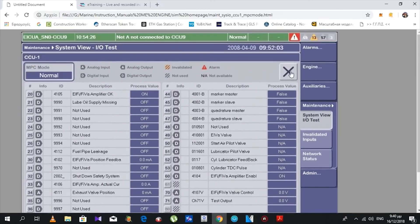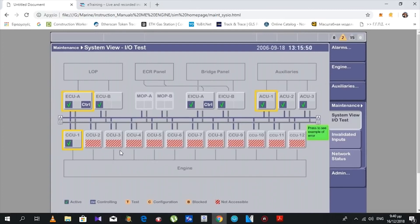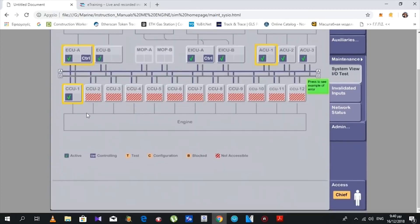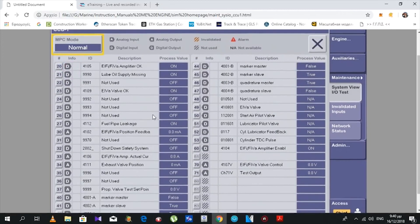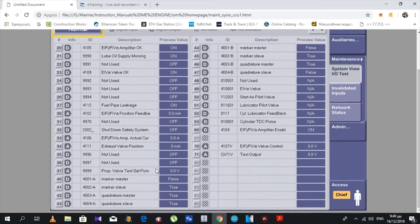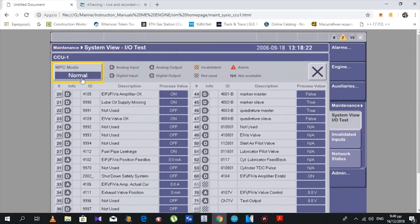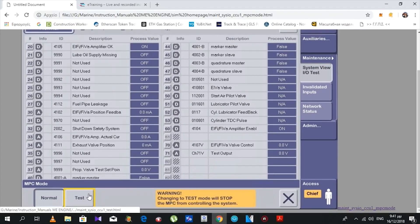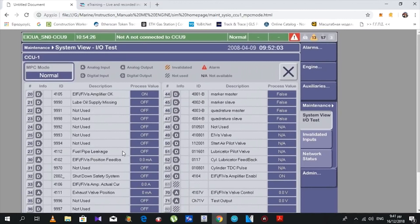If everything is normal, it's shown by a tick here. This is how we test to see if we have proper working of all the signals: the analog input, digital input, and analog outputs.